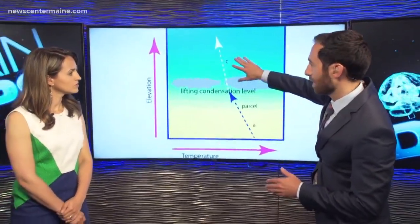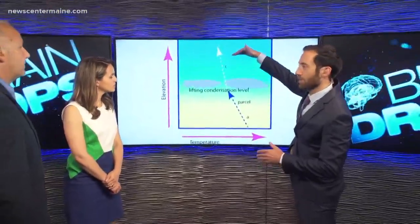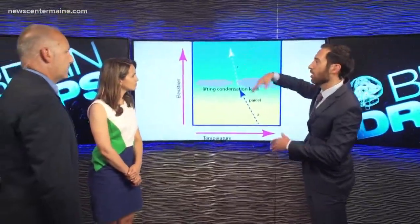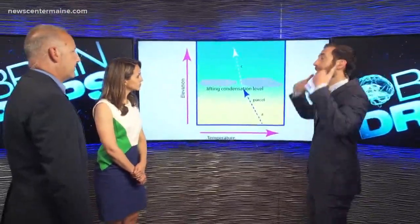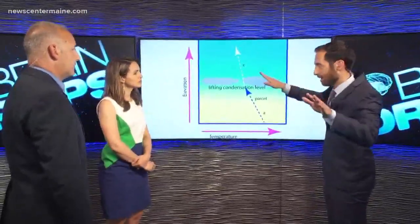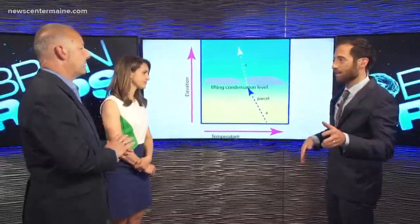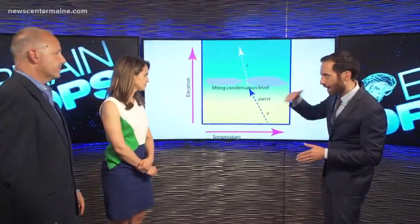From there on out, cloud forms continuously, and then eventually you hit the top of the atmosphere — you can't raise that parcel anymore, and that's the end of the cloud. So when you see this in the atmosphere, you see these very flat-bottomed clouds. It's very flat — that's where the LCL is.